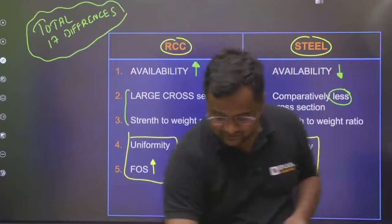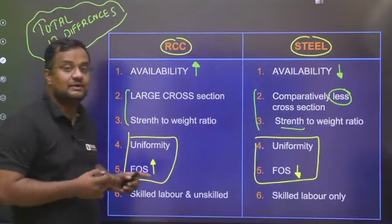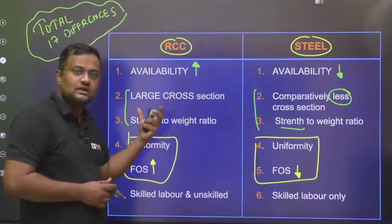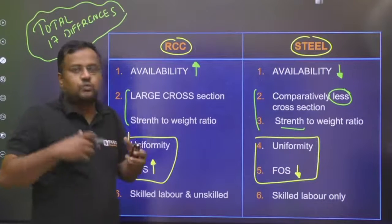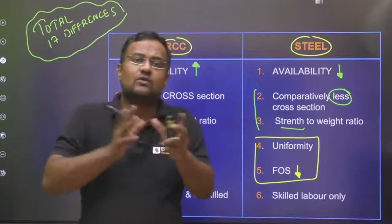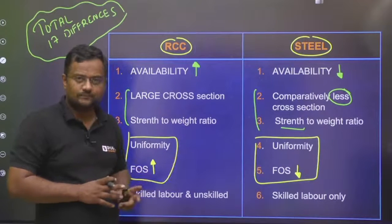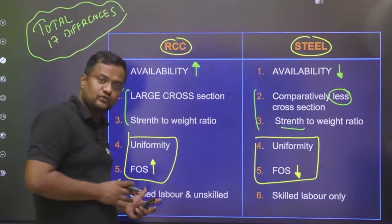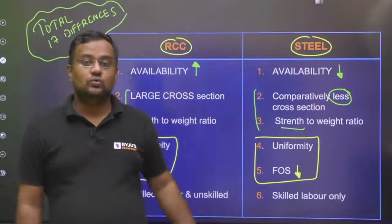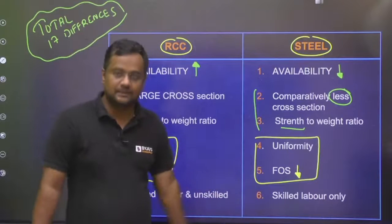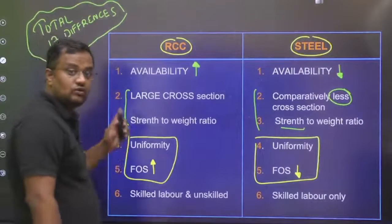The next difference is labor. Both skilled and unskilled labor can help in RCC construction. For making an RCC structure, some parts require skilled labor but other parts unskilled labor can do. However, for steel structures, mostly skilled labor is required. So these are six differences covered so far.